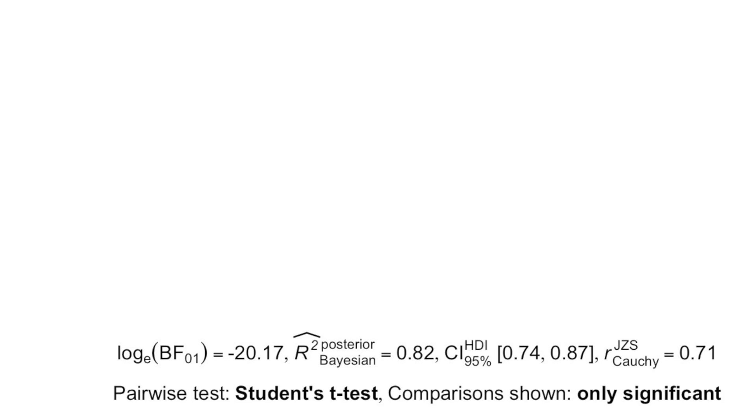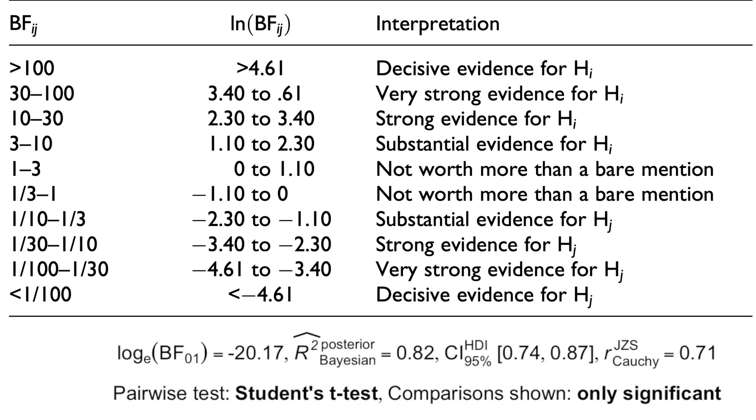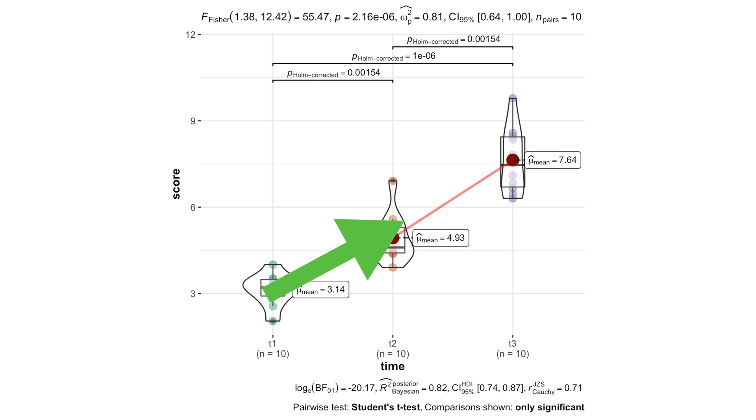If that's not enough, we can have a look at the Bayes factor, which is conceptually similar to the p-value. Our Bayes factor of minus 20 indicates a decisive evidence for the alternative hypothesis that training does increase our self-esteem, which is in line with the frequentist statistics on the top of the plot.